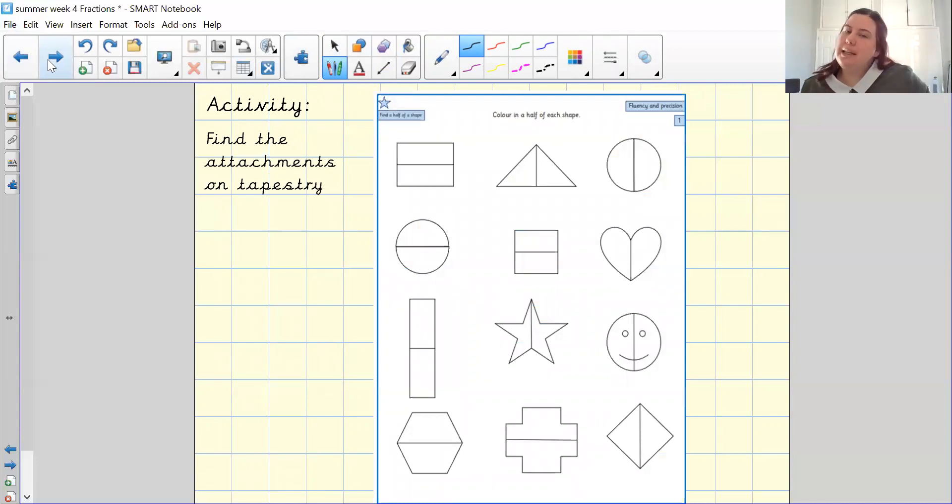So what you are going to do now is you could either draw out these shapes or if you go to tapestry there will be a range of these activity sheets for you to complete at home. As you can see, there is one star, two stars and three stars that you can complete and make it harder as you go on. So try and challenge yourselves as much as you can.